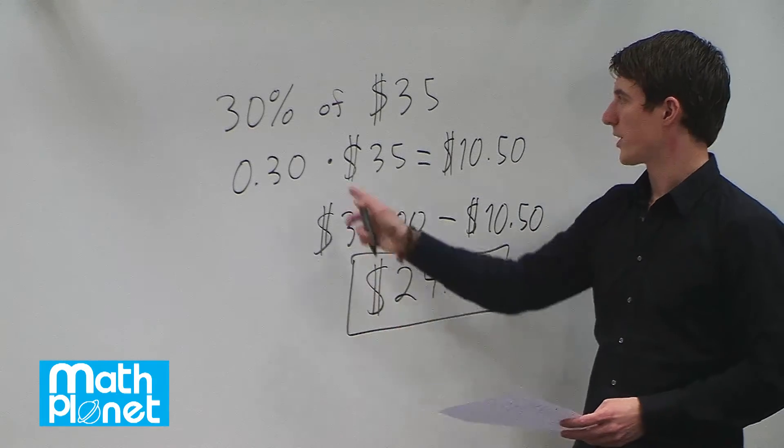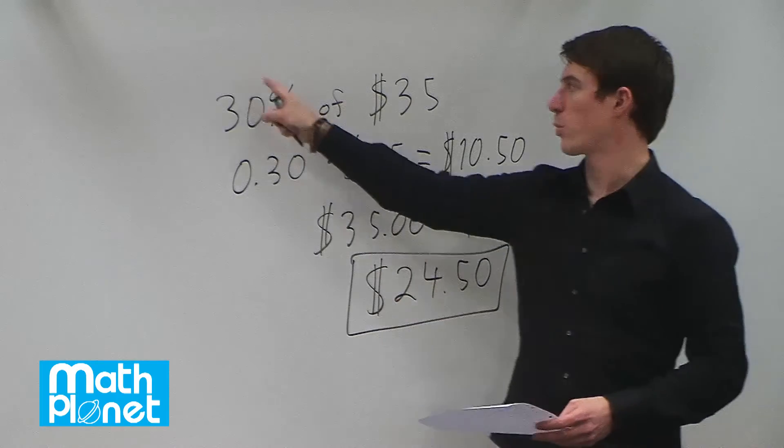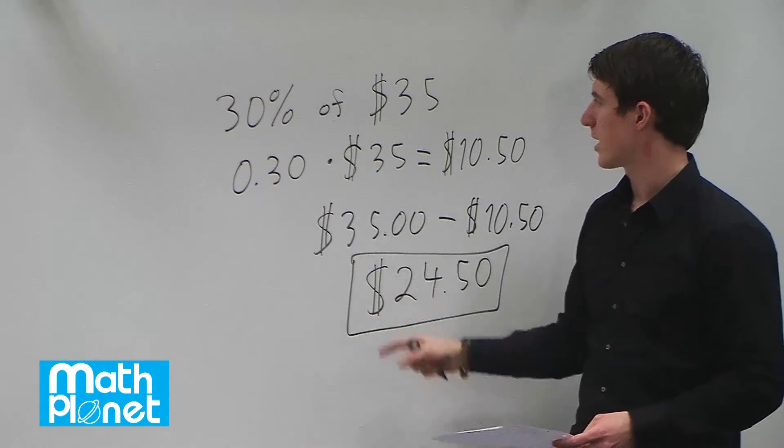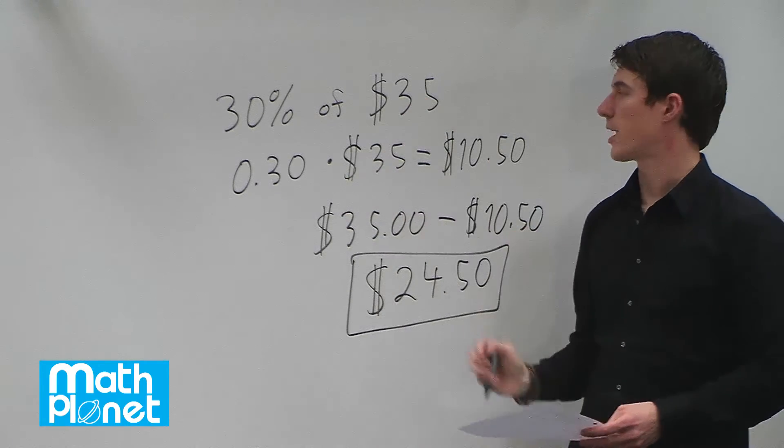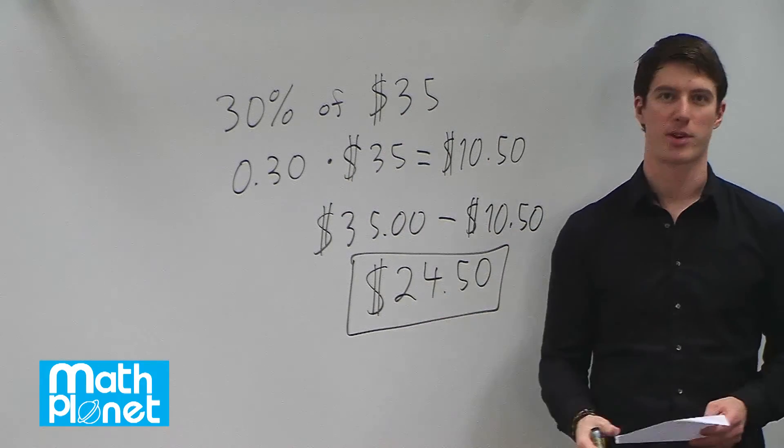If we wanted to, we could see that the total cost of the item is just what's left from 100% of this. So we could have said 70% times 35, or 0.7 times 35. And that would have also given us $24.50.